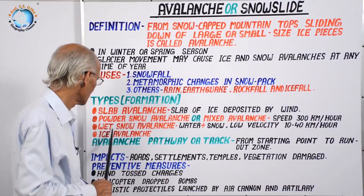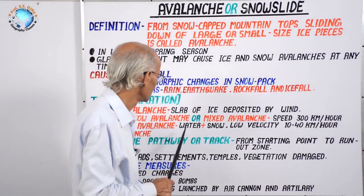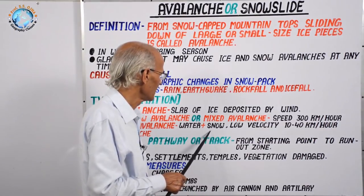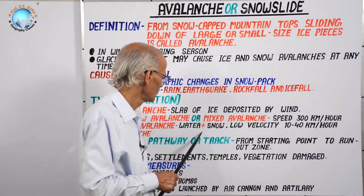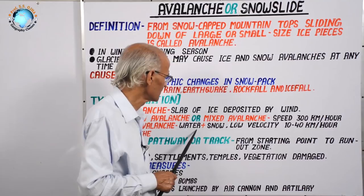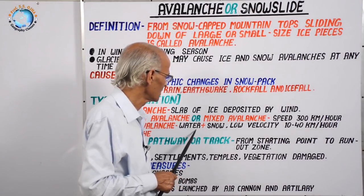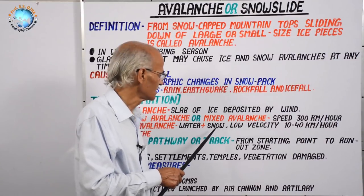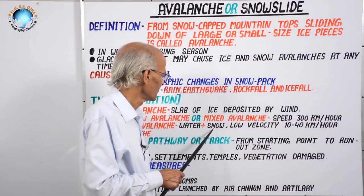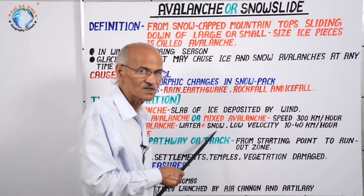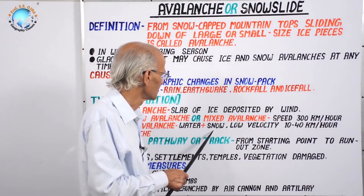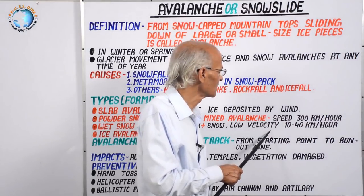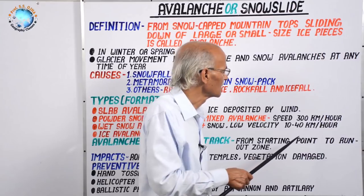Next is wet snow avalanche. It consists of both water and snow. In the higher parts of the mountain there is only ice and snow, but as the avalanche slides down, increasing temperature causes melting and water mixes in. Its speed is lower, about 10 to 40 kilometers per hour, as the slope becomes gentler.